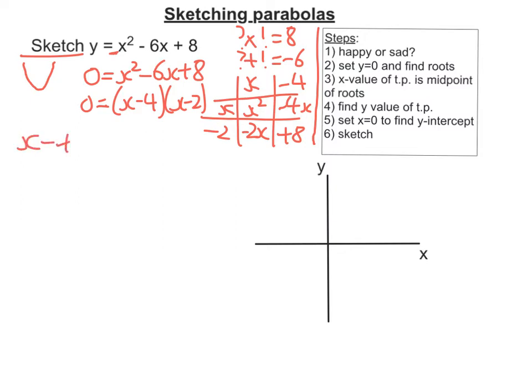So I've got two brackets that multiply together to give 0. So either the first bracket is 0 or the second bracket is 0. So in this case, we solve those two equations: x is 4 or x is 2. So they are my two roots, so I'm going to put them onto my diagram here.